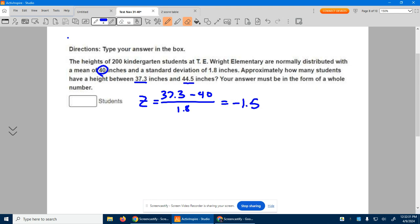The other one, 44.5. 44.5 minus the mean of 40, which gives us 4.5 on top, over the 1.8, equals 2.5.